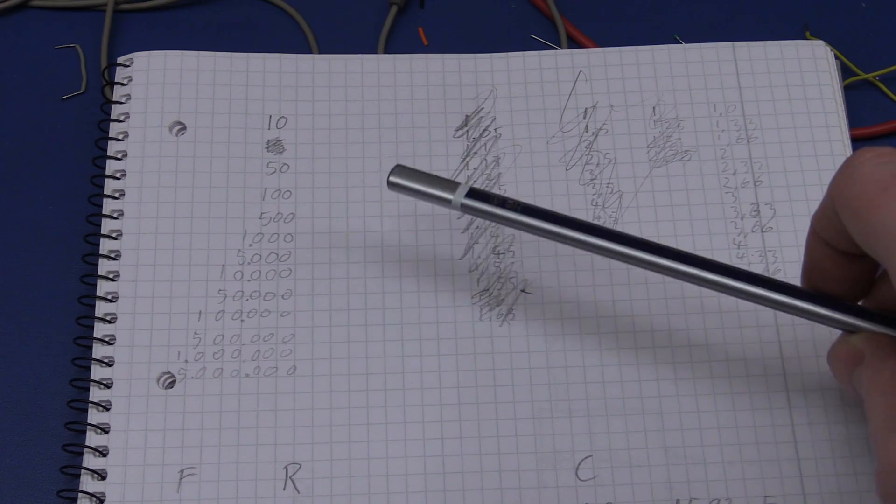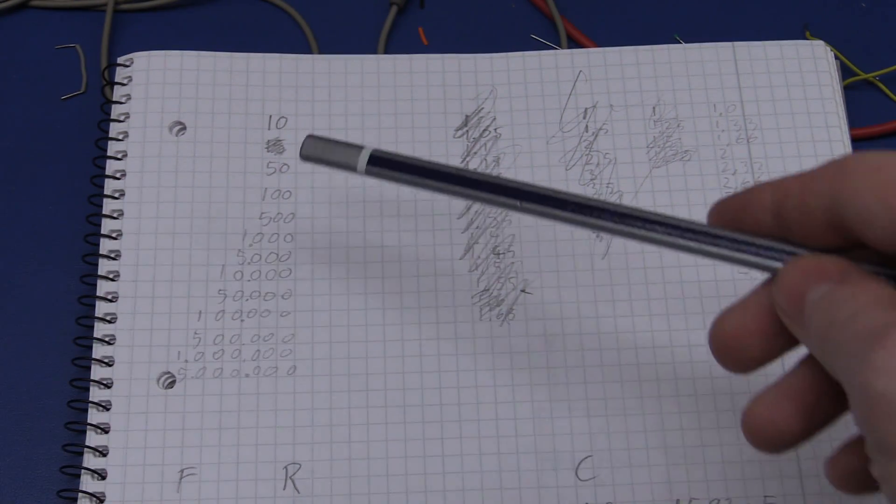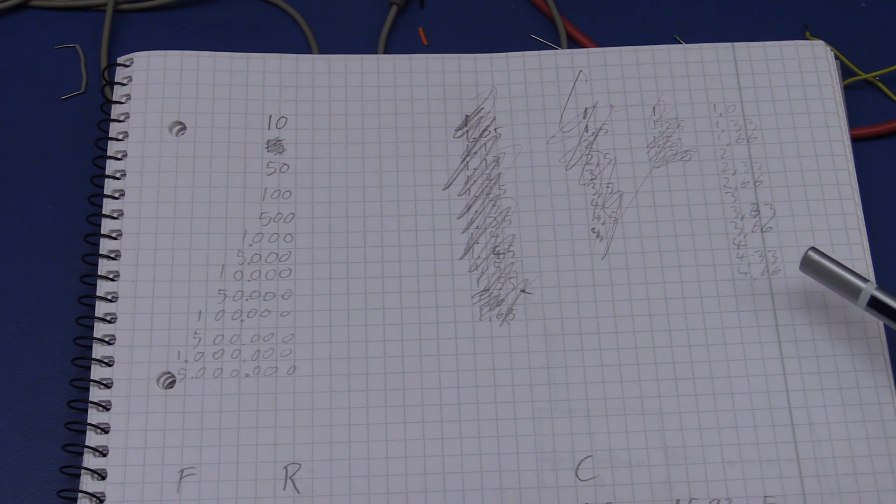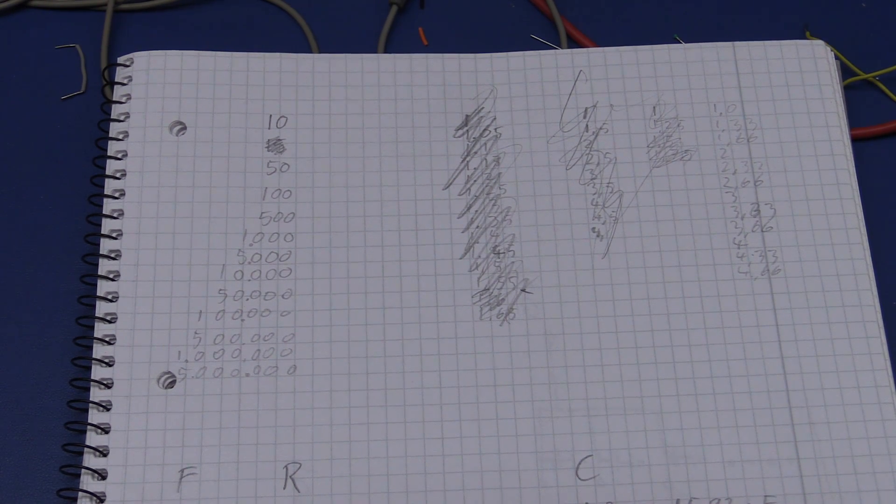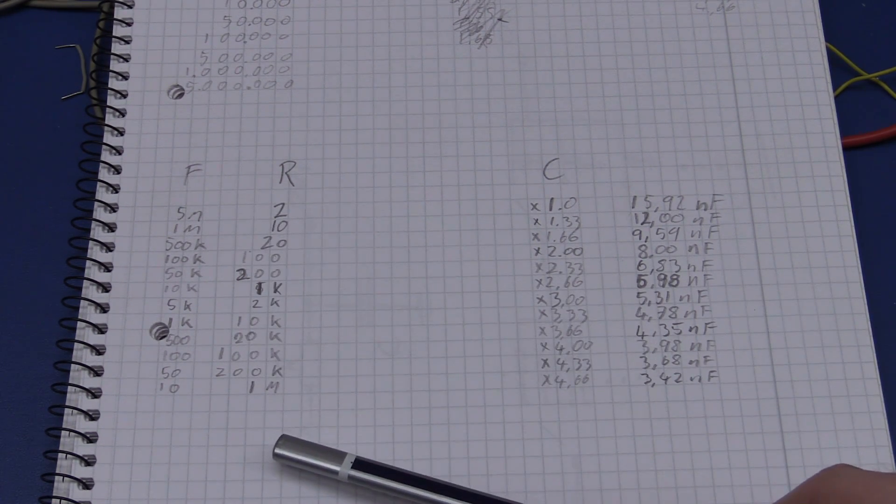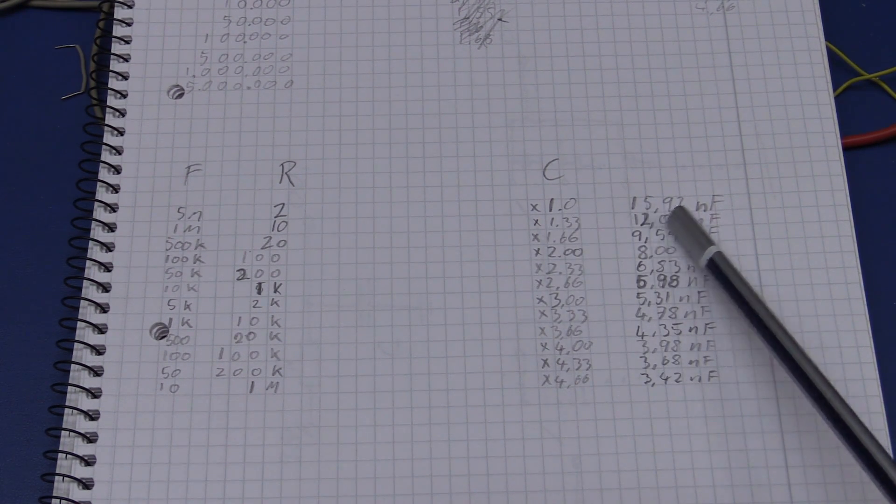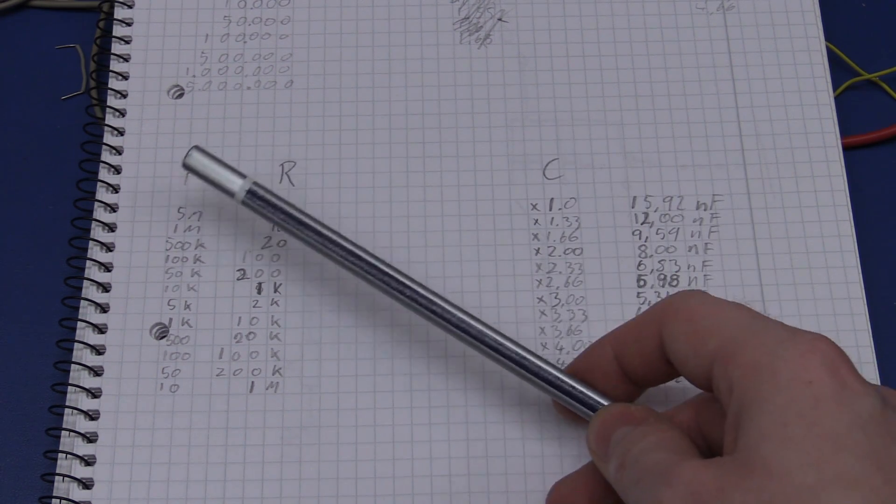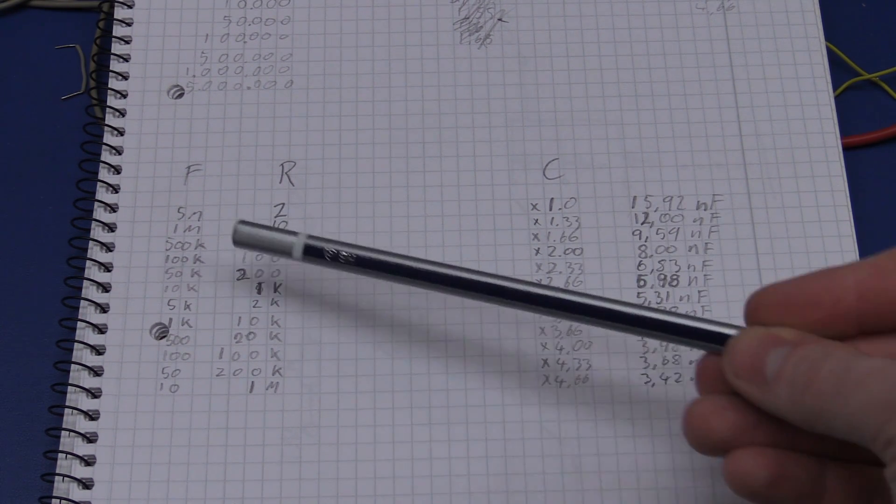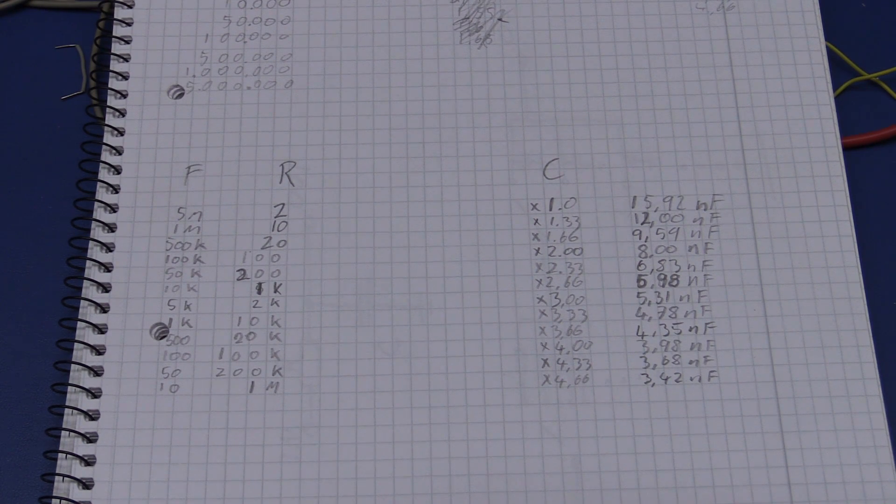I went and did that, but before I could do that I wanted to select the frequencies that I wanted, and these switches have 12 positions, so I just made 12 values here. Then I selected the multiplier, which should be the other switch. After I did that I used the equation to find all the values. These would be the resistor values for a multiplier of 1, which would require a 15.92 nanofarad capacitor. The neat thing is that if you increase your resistor by an order of magnitude, then your cutoff frequency will lower by an order of magnitude, or 10 times.